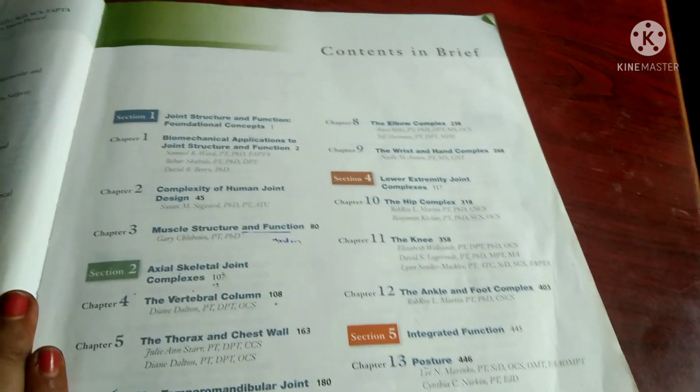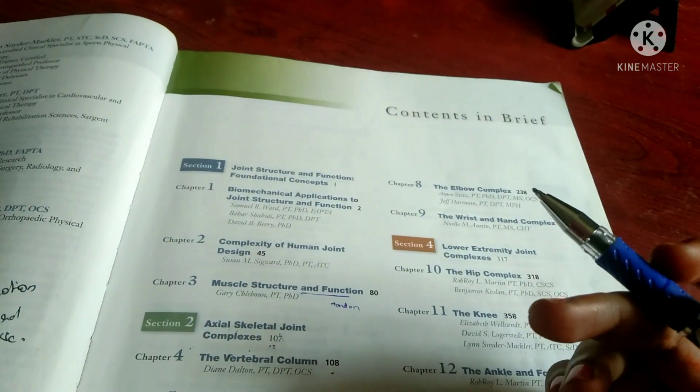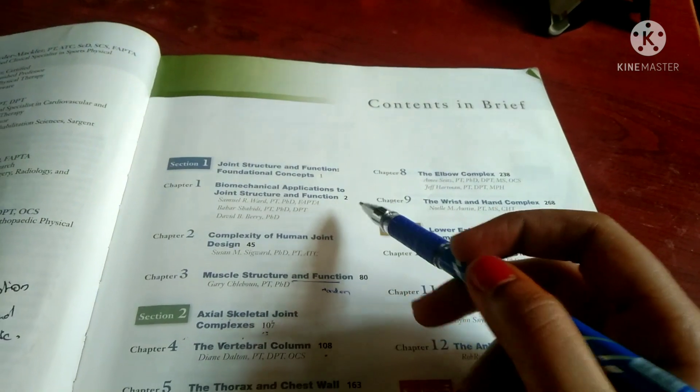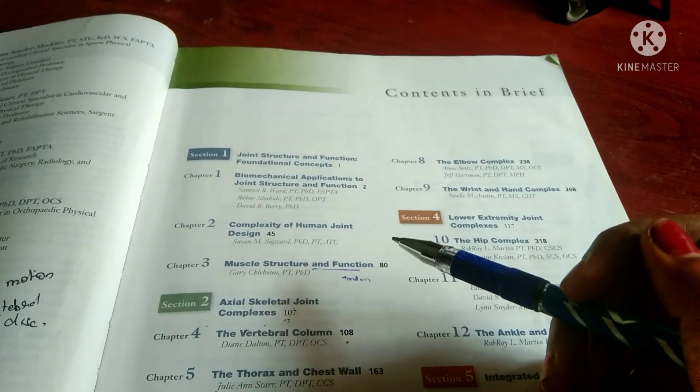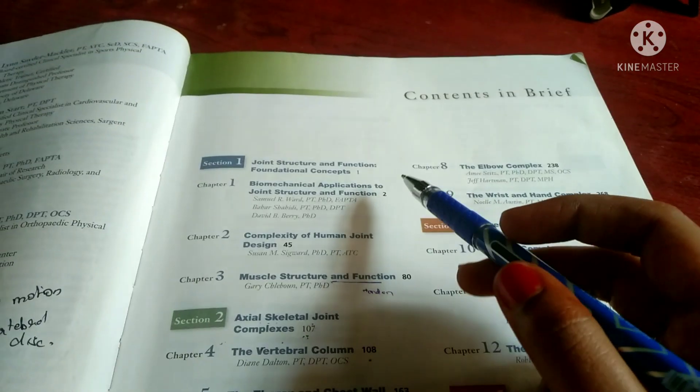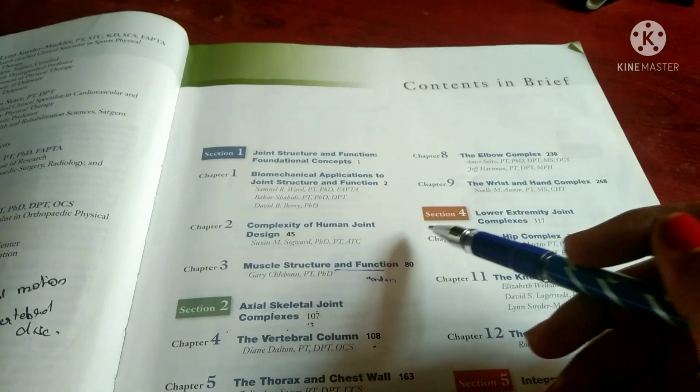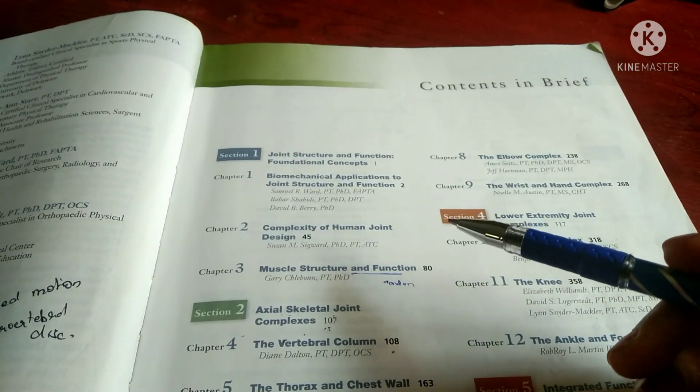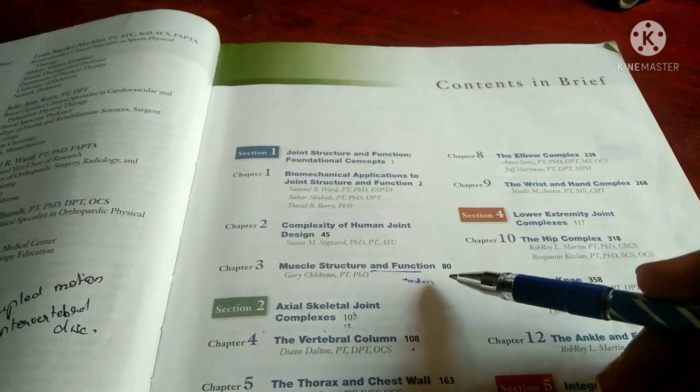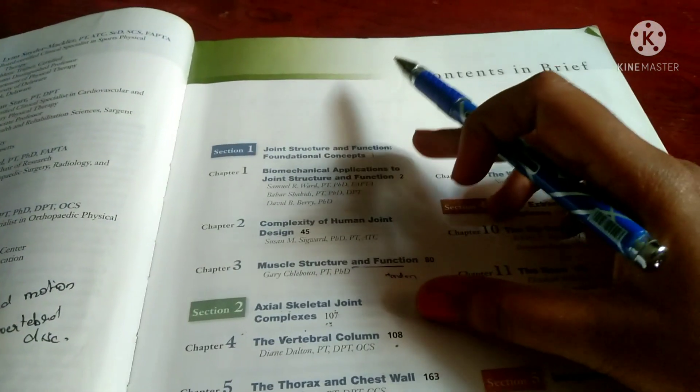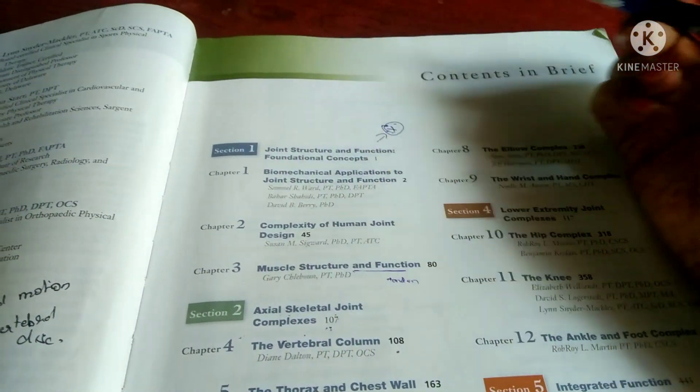Now we'll see what topics are frequently asked in exams. First, the joint structure and function, and the introduction to biomechanics - these three chapters are really important. Many will skip these three chapters but they are really simple and important. In the first chapter we have the COG, LOG, then axis and planes, Newton's law, then levers and mechanical advantage. In the second we see types of joints. In the third we learn about muscle functions, contractile unit, and the stress-strain curve. So the first section, these three chapters, are really important.